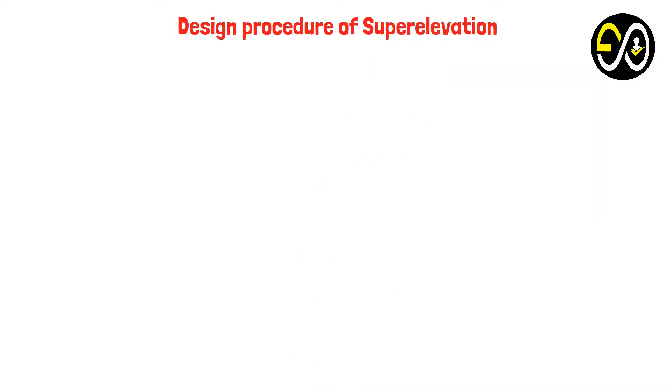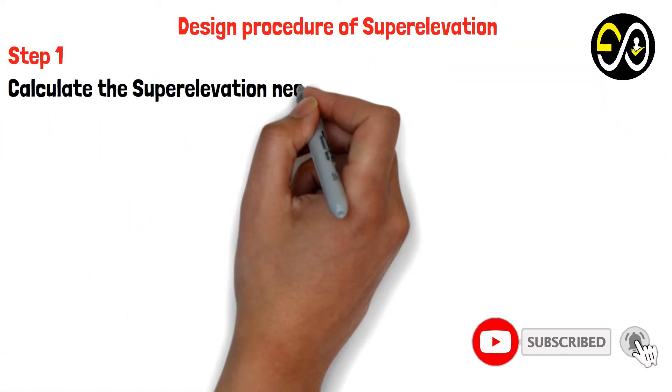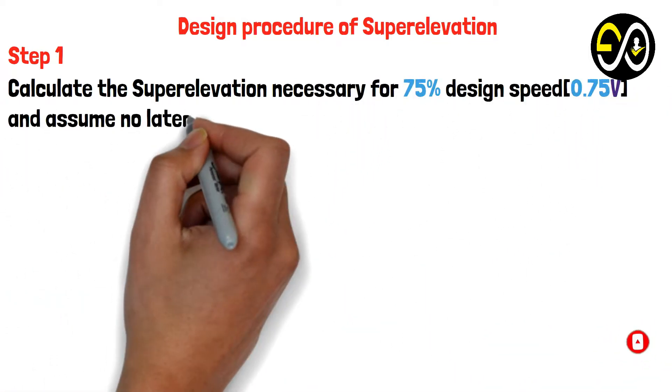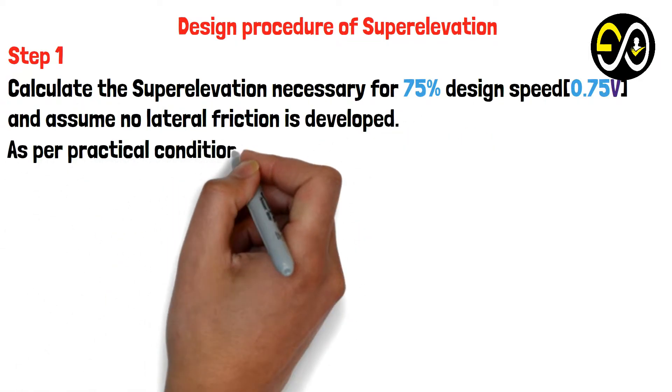Design procedure of superelevation, Step 1: Calculate the superelevation necessary for 75% design speed (0.75V) and assume no lateral friction is developed. As per practical conditions, it is suggested that superelevation should be provided to fully counteract the centrifugal force.